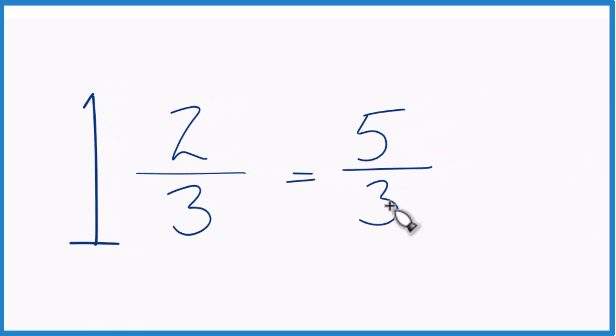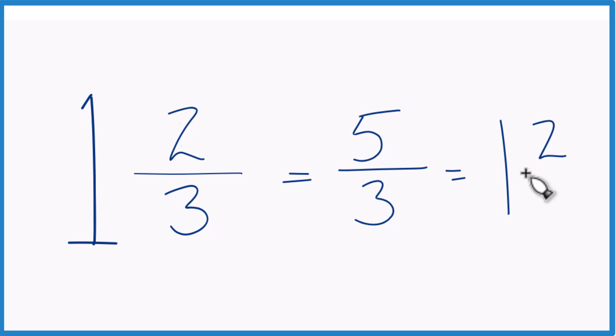We can check our work too, because 3 goes into 5 just one time with 2 left over. Bring the denominator across, 1 and 2 thirds, and that's what we started with.